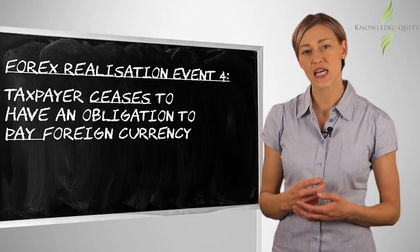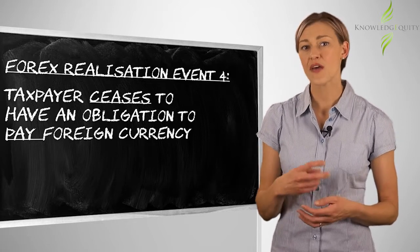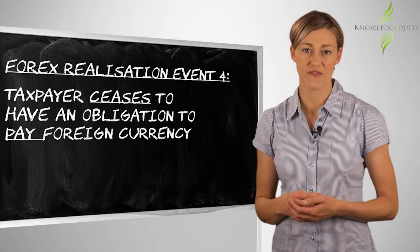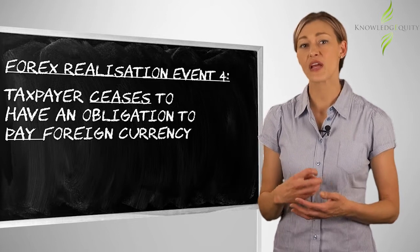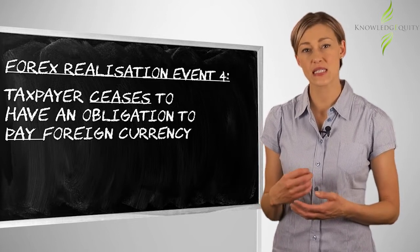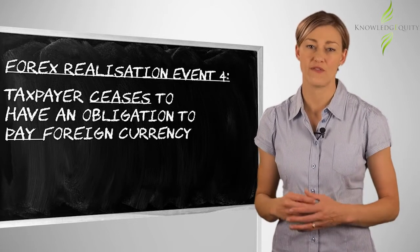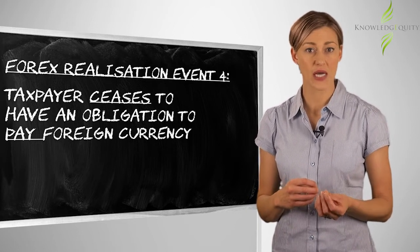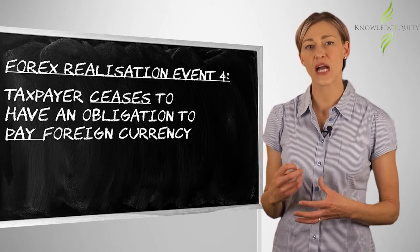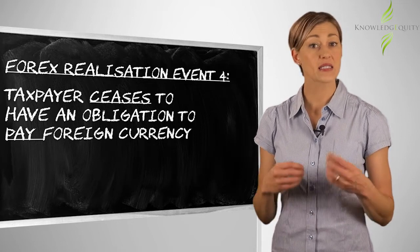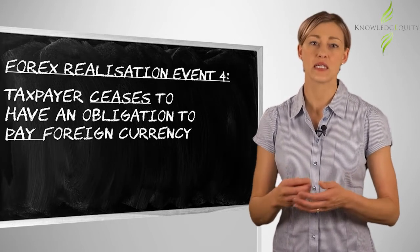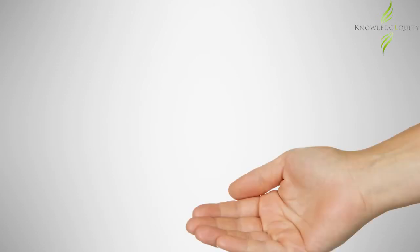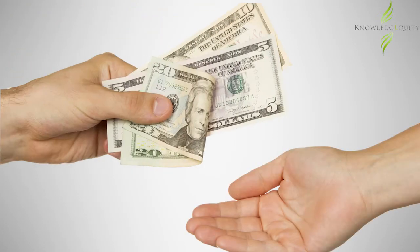Forex Realisation Event 2 and Event 4 are the most common Forex Realisation events. FRE4 is when the taxpayer ceases to have an obligation to pay foreign currency. This occurs when the obligation expires, or the foreign currency is paid, that is, the obligation to pay is extinguished. For example, when the taxpayer pays an amount to an overseas creditor under a purchase contract denominated in a foreign currency.